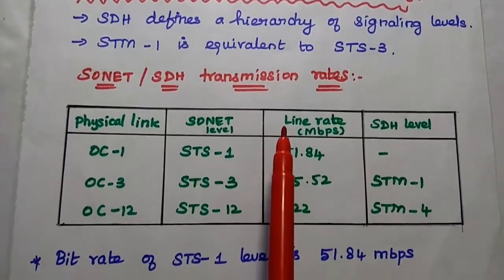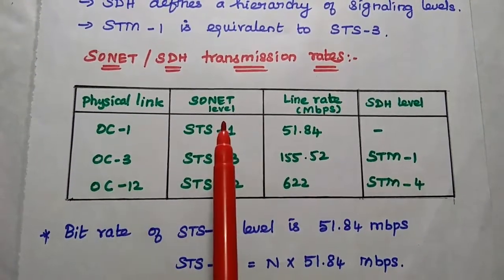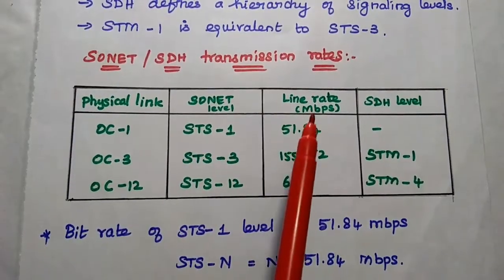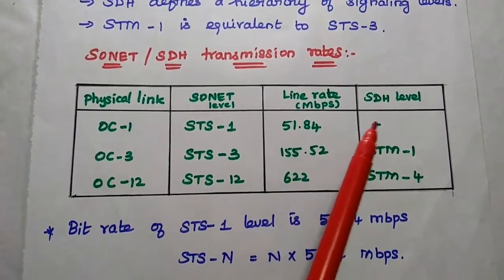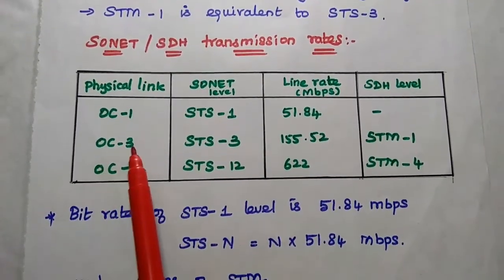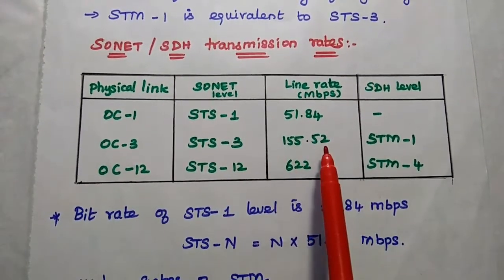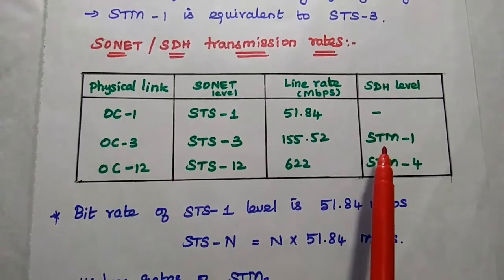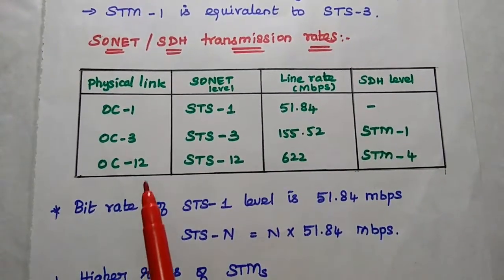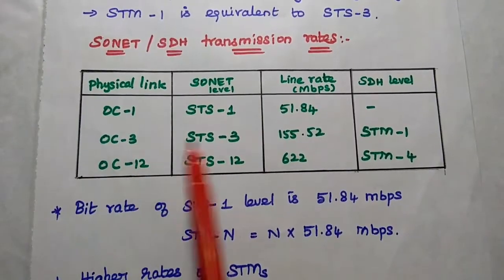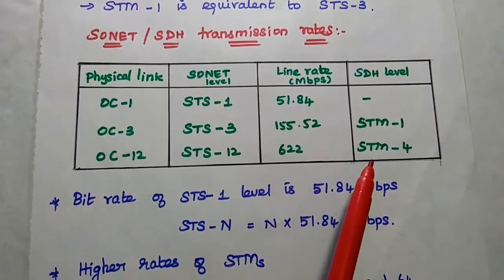This is the comparison of transmission rates in SONET and SDH. For OC-1, the SONET level is STS-1 at 51.84 Mbps — there is no SDH level for OC-1. For OC-3, the SONET level is STS-3 at 155.52 Mbps, and the SDH level is STM-1. For OC-12, the STS value is 12 at 622 Mbps, and the STM level is 4.